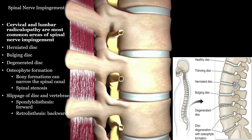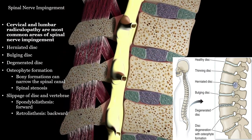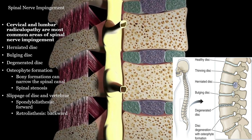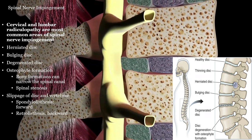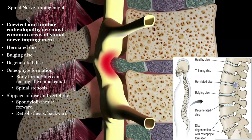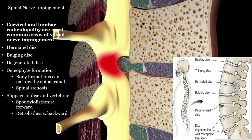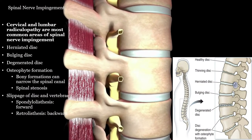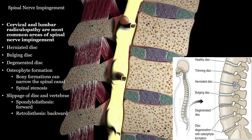A herniated disc hitting the spinal cord or nerve root can cause neurological problems as well as pain in the back that radiates to the areas the nerve root covers. Spinal nerve impingements can be painful and debilitating, and if left untreated, can cause permanent neurological damage.